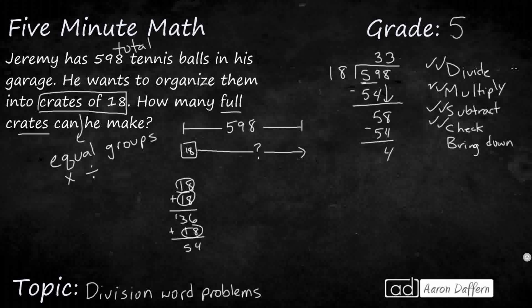We can either write this as 33 remainder 4, we can make this a fraction, 33 and then 4 18ths. You put your remainder as your numerator, your divisor as your denominator. But look at the question. How many full crates? Full crates. So if you have extra, that's fine. How many full crates can we make? We can make 33 full crates. We're really not interested in those four that are left over.